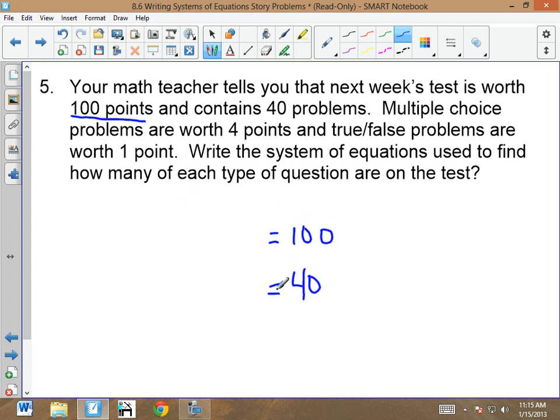100 is the total possible points. 40 is the total possible problems. So when I talk about 100, I talk about points. What makes up my points? It tells you here how you get those points. What makes up those points? Multiple choice. How many points are multiple choice? Four. Multiple choice problems are worth four. So 4m plus what else that makes up my points? How many are true-false problems? They're one point apiece, so I'm just going to put 1t. So 4m plus 1t equals 100 points.